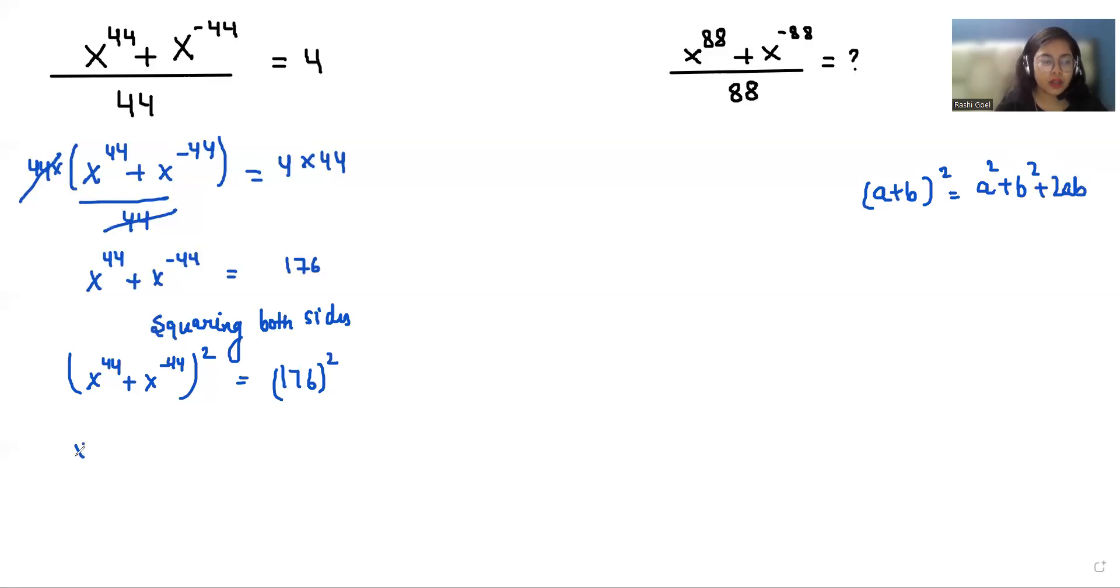So our a square is x power 44 square plus x power minus 44 square plus 2 times a times b.